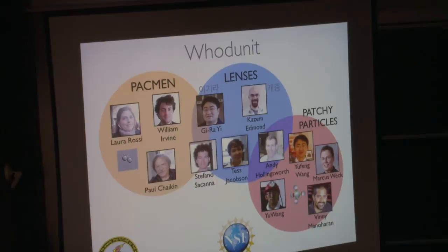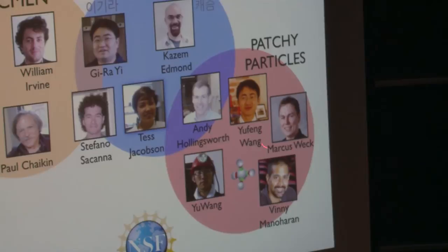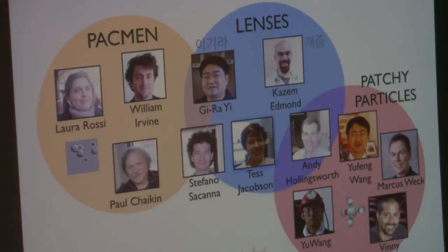So that's the work I wanted to tell you about today. These are the people who have done the work. As I said, Stefano Sacana was a big part of this. He was the one who made the Pac-Man particles. He's now on the faculty of the chemistry department at NYU. Giyuai Yee, he was one who came up with the idea for the lenses. Kazim Edmund made them. Vinnie Manaharan was the one who made the patchy particles. Yufeng Wang and Yu Wang figured out how to put the DNA on them and how to make these colloidal molecules. This is their thesis advisor, Marcus Weck, in the chemistry department. Paul Chaikin and I came up with the idea of Pac-Man and have been working together on that. And the Army and the NSF has supported this work. So, if you have any questions, I'd be happy to try and answer your questions.